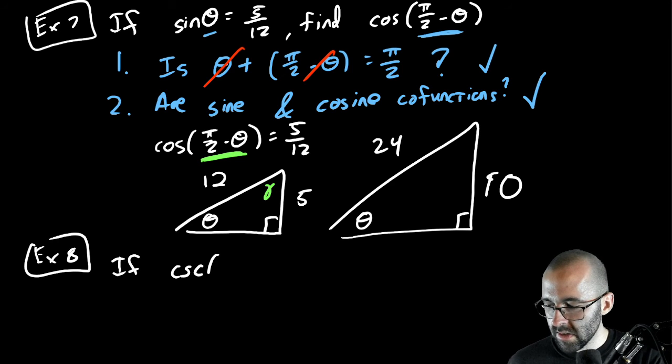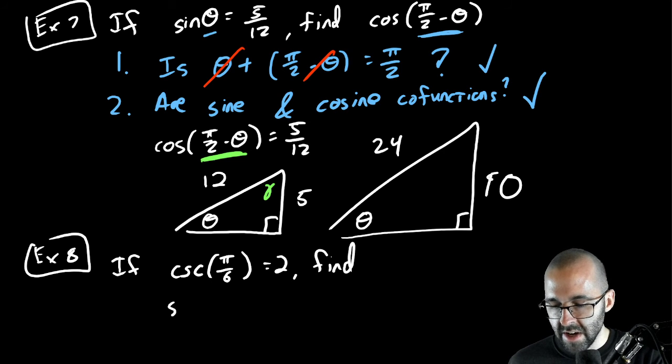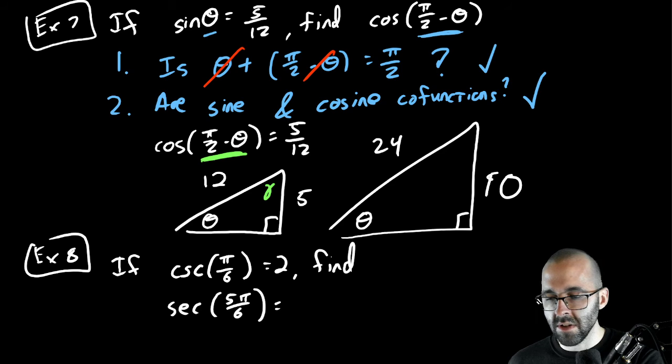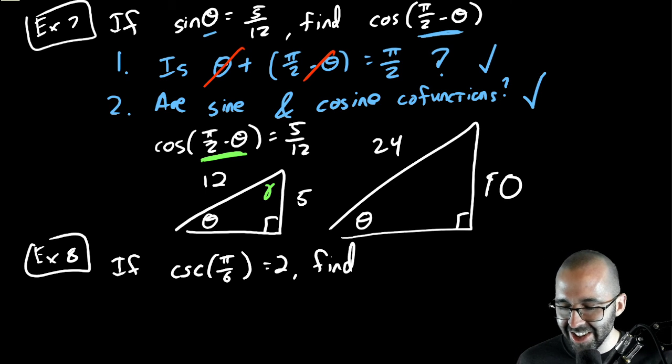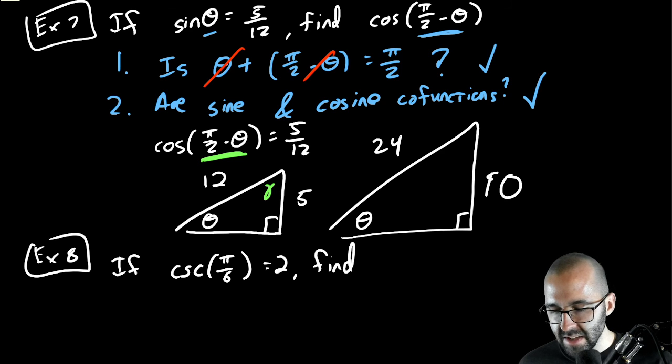If cosecant of pi over 6 equals 2, find the secant of... this is not the problem I wanted to write down for you. This is cosecant, those weren't complementary, those were supplementary I think. Find secant of pi over 3.